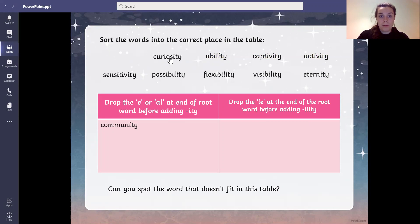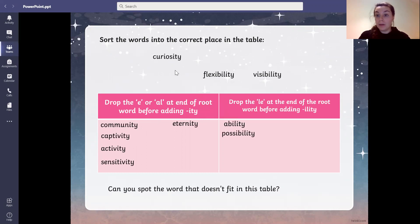Curiosity, let's see what we drop. We don't need to drop anything because the root word is curious. Ability, we drop able. Eternity, we drop eternal. Captivity, we drop the e for captive. Activity, we drop the e for active. Sensitivity, we drop the e for sensitive. Possibility, we drop the al, possible.